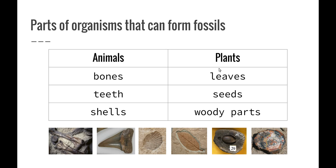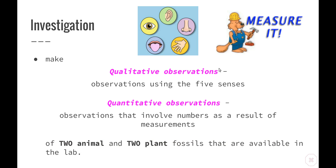What parts of organisms can form fossils? From animals, hard parts form fossils much more easily than soft parts, so most fossils we see will be bones, teeth, or shells. From plants, leaves form imprints quite nicely, seeds also form molds or casts, and woody parts become petrified.